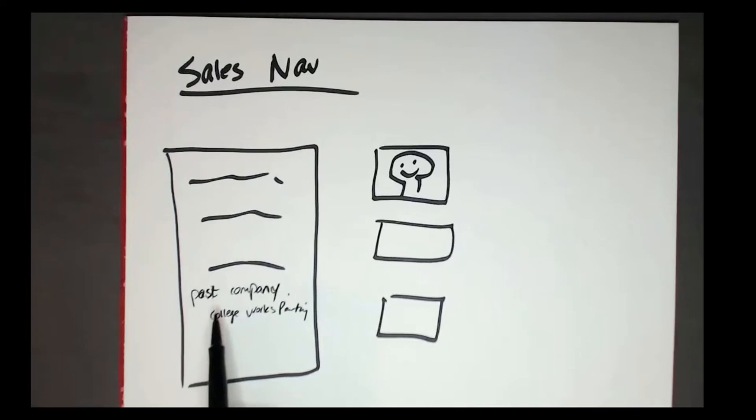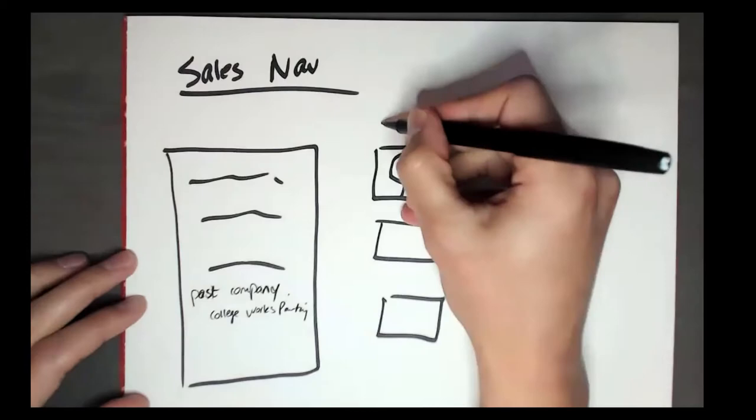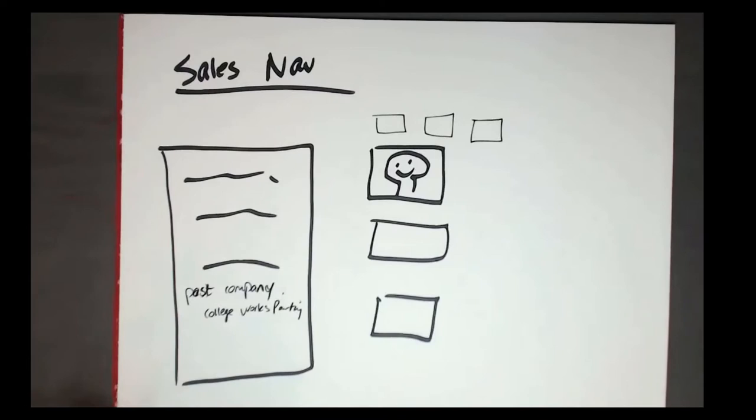For example, another company I worked for was College Works Painting — in college I went door-to-door selling house painting services. A lot of people who worked for College Works Painting go on to become sales leaders at other companies. So I can put that into the Past Company filter and find people I used to work with. There might be gold in your past companies too — who did you work with that is now in a leadership position you could prospect to?